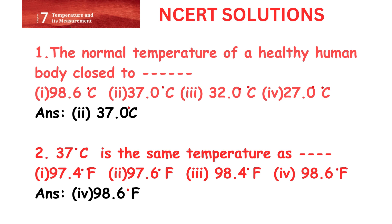Question 2: 37°C is the same temperature as — in Fahrenheit. Options: 97.4°F, 97.6°F, 98.4°F, or 98.6°F. The correct option is option 4: 98.6°F.